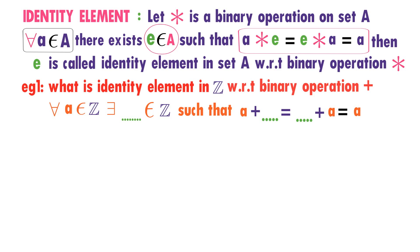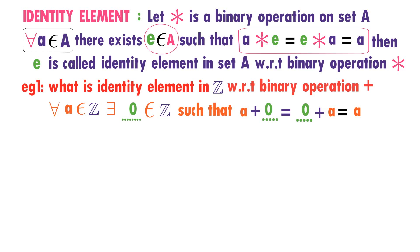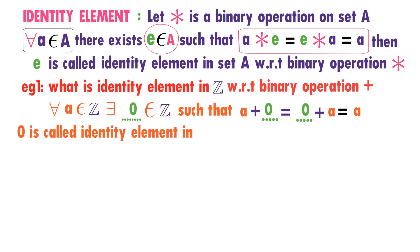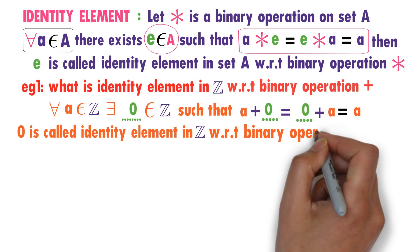Now think: A plus some integer equals A. A plus what number equals A? It is clear: A plus 0 equals A, and 0 plus A equals A. So 0 is an integer satisfying the condition A star 0 equals 0 star A equals A. Therefore, 0 is called the identity element in Z with respect to binary operation addition.